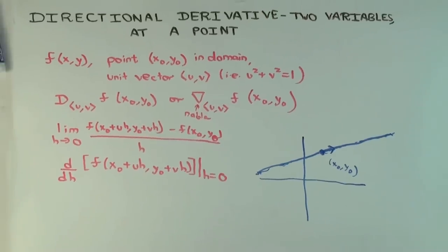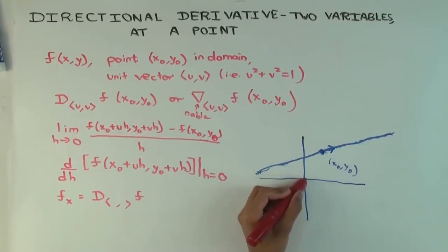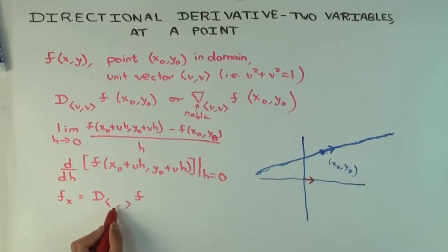Now I want to say a couple of small things which should actually come up in more detail later. The first is that f sub x is just the directional derivative in the direction of which vector? What vector should you put here? So what will u be and what will v be? What will the coordinates be here? So that it's just the partial derivative in the x direction. What's the unit vector in the x direction? The unit vector in the positive x direction. What's that? What's the x coordinate?